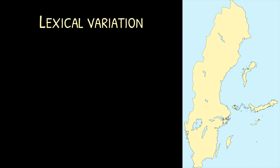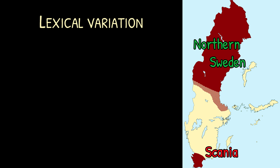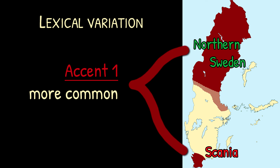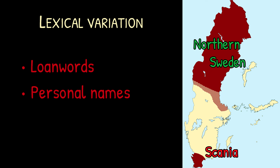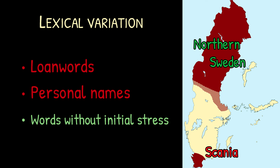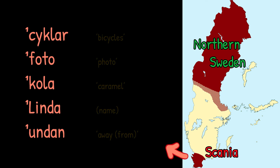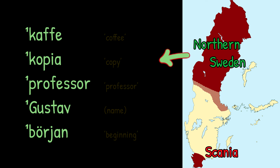Okay, final thing: lexical variation. Something to watch out for is that words can have different accents in different dialects. Two regions stand out here — Scania and northern Sweden — though please take these borders with a grain of salt. In both of these areas there is a higher preference for Accent 1 than in the rest of Sweden. I don't have any good patterns to give you here, and there is of course variation, but loan words and personal names are especially common among such words in both areas, and in the north it's also common for words without initial stress. Examples from Scania are 'cyklar', 'foto', 'keola', 'linda', 'undan'. Examples from northern Sweden are 'kaffe', 'kopia', 'professor', 'gustav', 'början'.